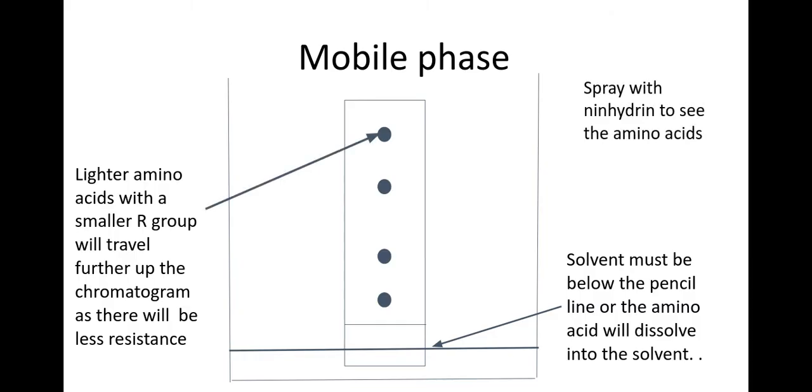Now in order to see our amino acids we must spray the chromatogram with ninhydrin and ninhydrin dyes amino acids purple so it allows you to see your amino acids in a lovely purple colour.